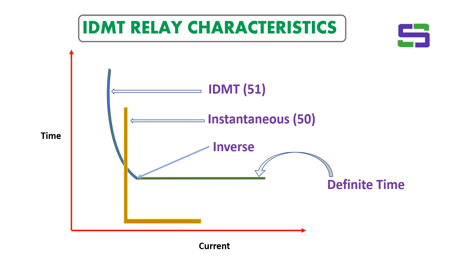The instantaneous element, in combination with the 51 and 50 elements together, will protect a specific zone. The left-hand side and lower-hand side zone is protected by the 51 and 50 elements of the IDMT relay. This is the basic concept of any IDMT relay for protection coordination in an electrical power system network.